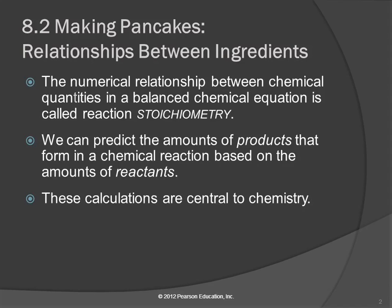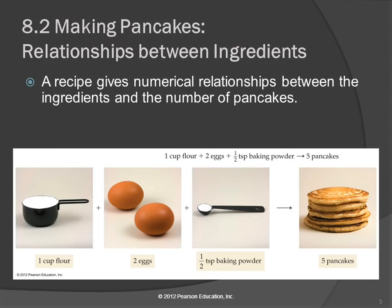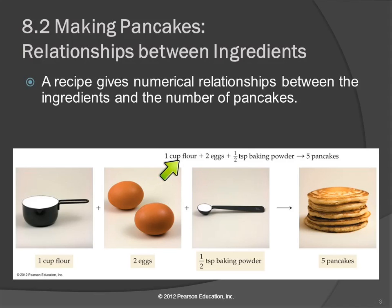Just like if you're cooking, you can anticipate how many cookies you could possibly make if you know how much flour and sugar and everything else you have. These sorts of calculations are really important to chemistry — Chapter 8 is a big deal. In this recipe, we're going to use one cup of flour, two eggs, and half a teaspoon of baking powder, and you cook those up and you get five pancakes. The recipe gives us numerical relationships between how much of the ingredients we need and how much of the product we're going to get. We can actually write this out so that it looks like a chemical equation: one cup of flour plus two eggs plus half a teaspoon of baking powder yields five pancakes.